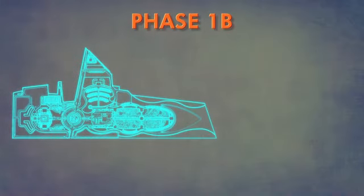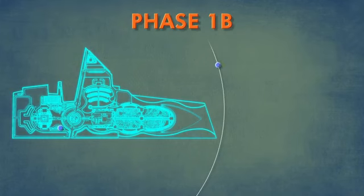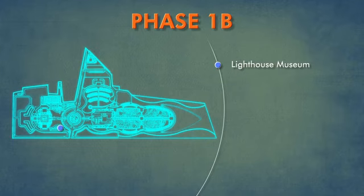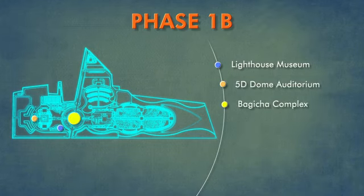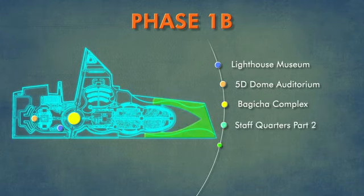Phase 1B includes Part 2 of the National Maritime Museum, the Lighthouse Museum — which will be one of the world's tallest lighthouse museums, to be developed by DGLO — a 5D dome auditorium, the Bagheechah complex with elevated traffic drop-off and parking, Part 2 of the staff quarters, and a nature conservation park.